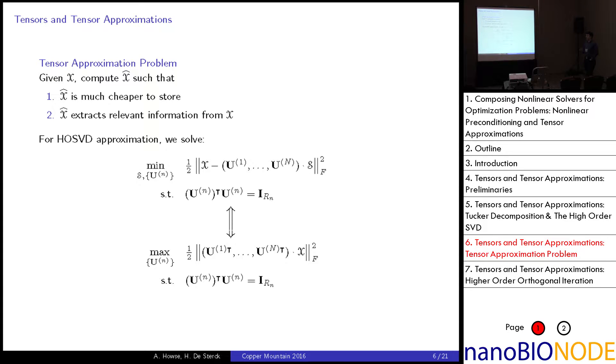So, the tensor approximation problem. We're given a tensor X, this is some data from recorded observations, output from code, what have you. We want to compute an approximation X hat, which is cheaper to store, and hopefully we'll extract some relevant information from X. If we want to express X hat in the HOSVD format, we will solve the optimization problem. We minimize over the components of the decomposition, the difference between X and our approximation in the squared Frobenius norm. And, as we want our factor matrices to be orthogonal, we have these orthogonality constraints. I won't get into the details here, but due to some nice properties of this problem, we're able to reformulate it as this maximization problem, where we can omit the core tensor S and only have to worry about our matrices U.